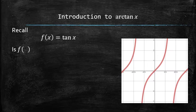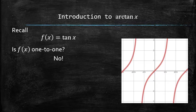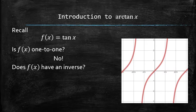Is this function 1-to-1? The answer is no, because it doesn't pass the horizontal line test. Does this function have an inverse? The answer is also no, because only 1-to-1 functions have inverses.